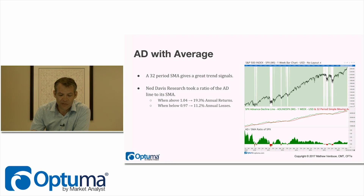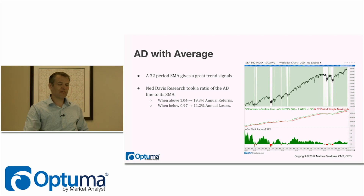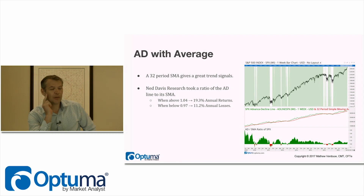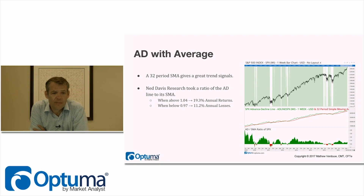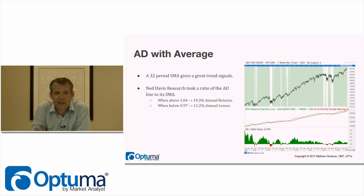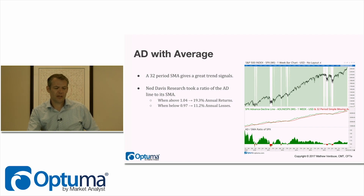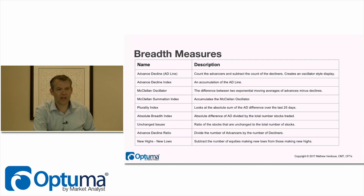Ned Davis Research did a lot of work comparing the AD index to its moving average — starting at 100, when the market was above 104 it showed a 19.3% annual return, and when the measure dropped below 0.97 it showed 11.2% average annual losses. The green shaded area on the chart shows where the market is above that moving average threshold, with some nice trades based on not selling until it goes below the lower threshold.